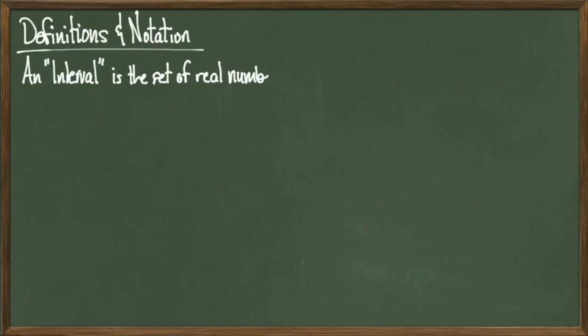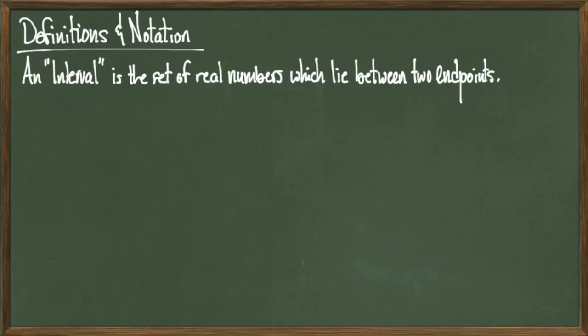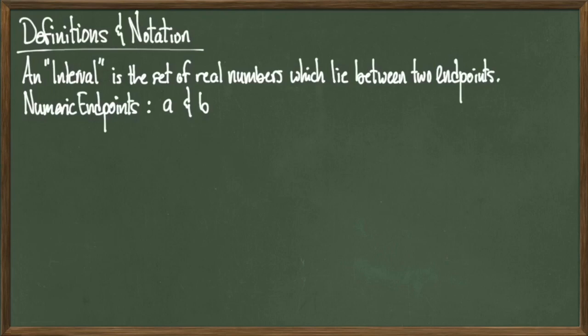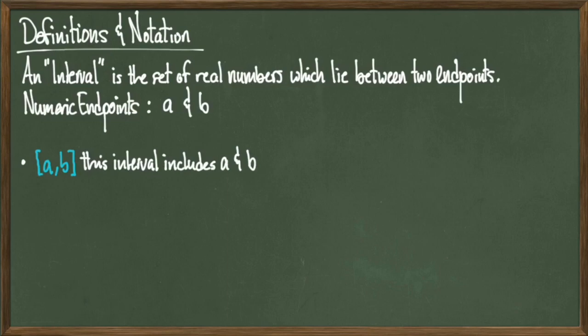An interval is a set of real numbers which lie between two particular endpoints. This slide talks about how to write, draw, and describe an interval that has two numeric endpoints, which we'll call a and b — we'll address infinite endpoints shortly. For now, we assume a is less than b. The notation [a, b] refers to the set of all real numbers between a and b that also includes both a and b, because they both have square brackets written next to them.